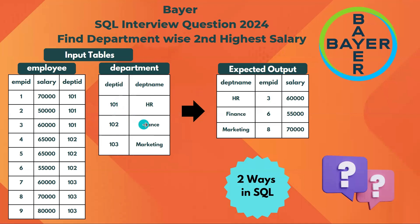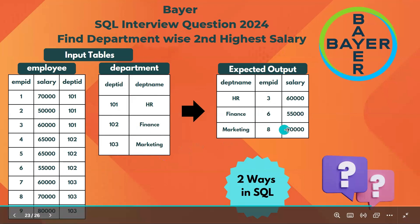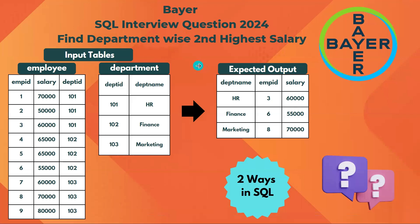Similarly, for the next department Finance 102, we have three records. The first two records have the same salary, and the next record with the second highest salary is 55,000 — for employee D6, that is what we need in the output. Similarly, for the next department Marketing, the second highest salary is 70,000. In this way we need to find out each department's second highest salary along with the employee ID.